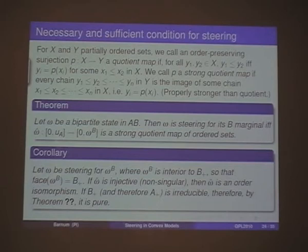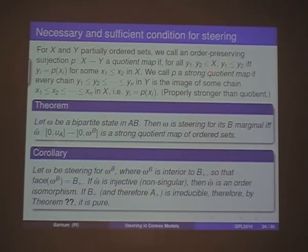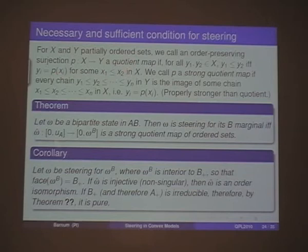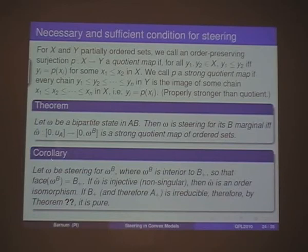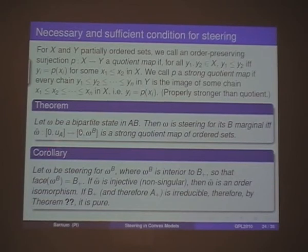We have an order-theoretically necessary and sufficient condition for steering. For partially ordered sets, we have an order-preserving quotient map from one set onto another: for every ordered pair in the image, there's a pair of preimages ordered in the same way. And then it's a strong quotient if not only for every pair, but for every chain in the image, we can find a chain of preimages. The theorem is: a bipartite state omega in composite AB steers for its B marginal if and only if the associated map takes the unit interval — the set of legitimate effects between zero and the unit effect — to the interval between zero and the marginal state, and that map is a strong quotient map.